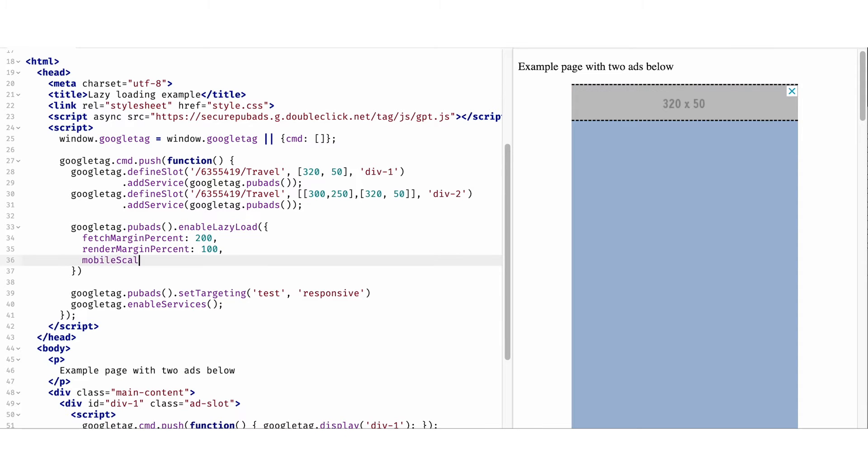Lastly, we'll set mobile scaling to 1, meaning mobile and desktop will have the same margins. That's it. You now have enabled lazy loading on your website.